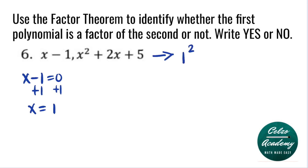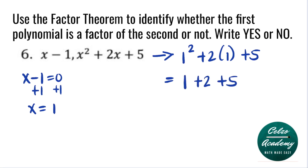That becomes 1 squared plus 2 times 1 plus 5. Simplifying: 1 squared is 1, 2 times 1 is 2, plus 5. So 1 plus 2 plus 5 is equal to 8. According to the factor theorem, if the value is equal to zero, that means the binomial is a factor. So for question number 6, x minus 1 is not a factor.